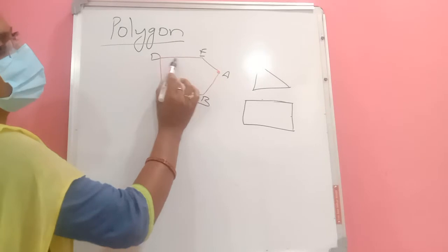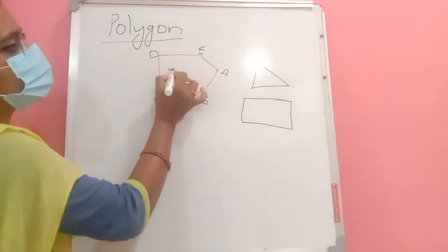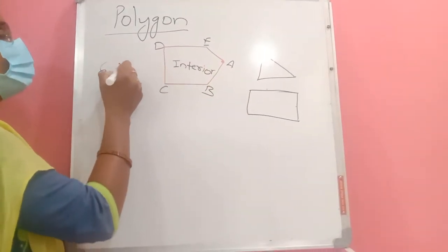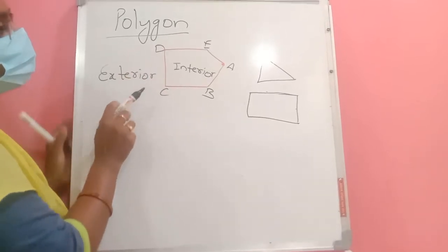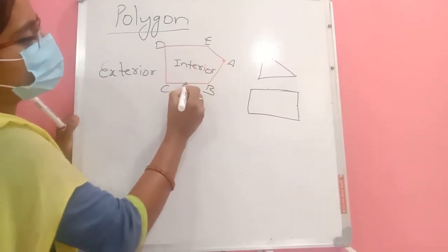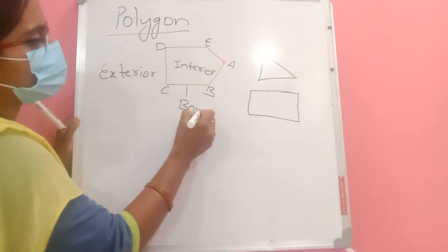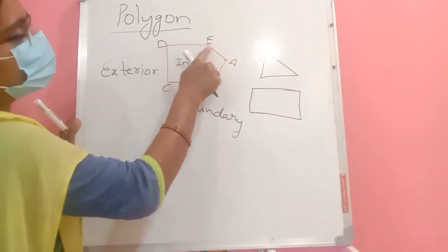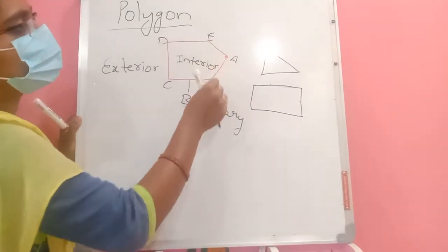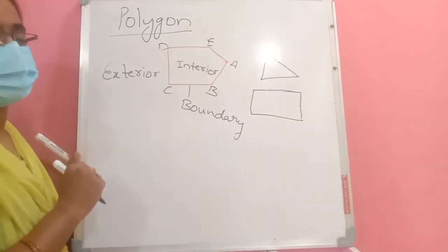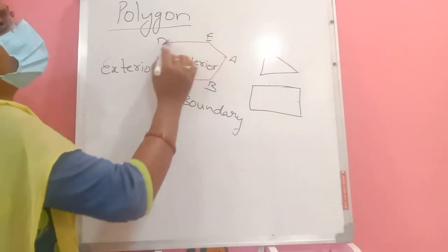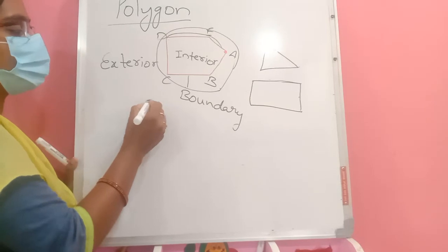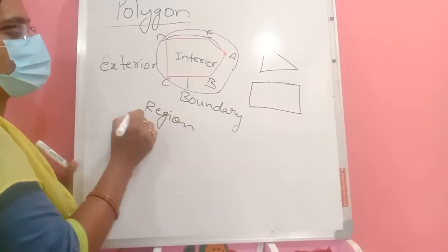In a polygon, the part inside is called the interior, and the part outside is called the exterior. The line segments forming the polygon are called the boundary. The interior and the boundary together are called the region of the polygon.